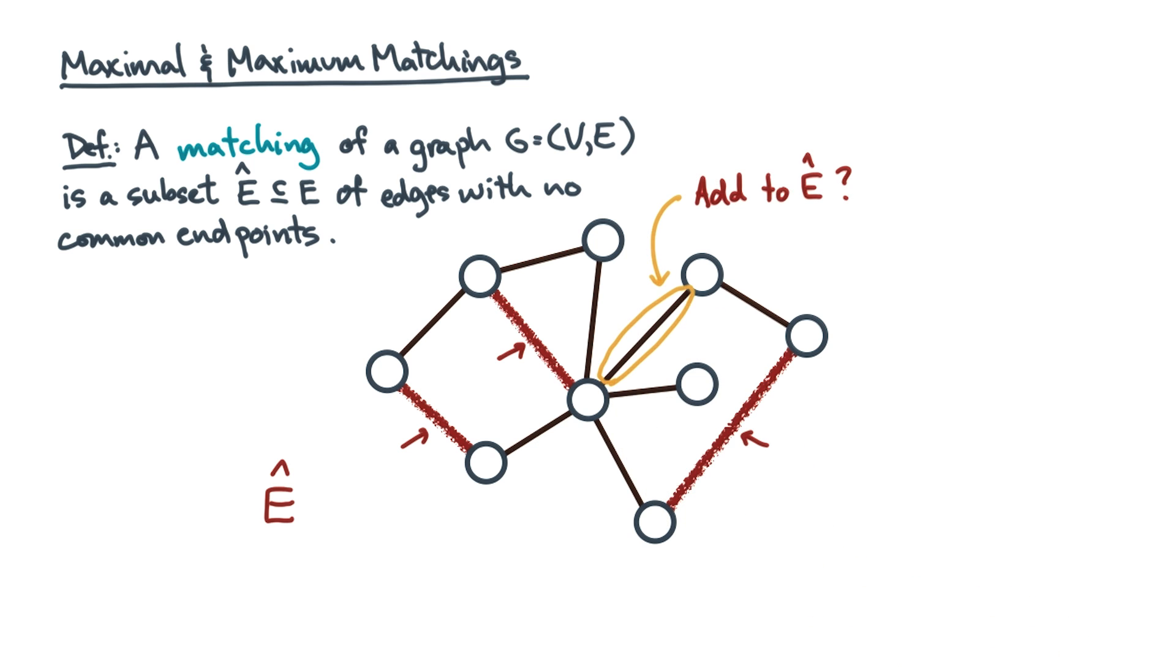That is, suppose you wanted to add this edge to the matching. Bad OMSCS student. You can't add this edge because it would touch an existing edge of the matching.